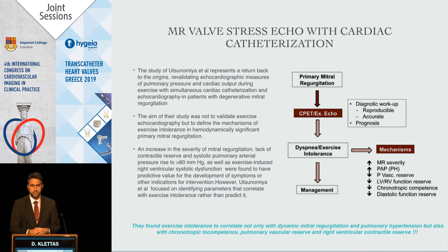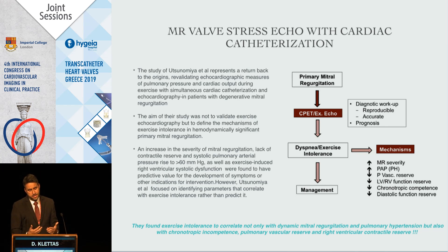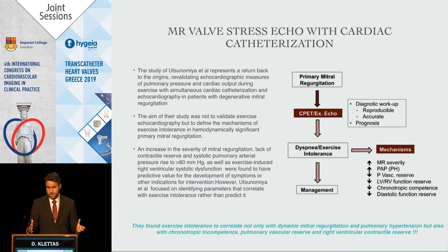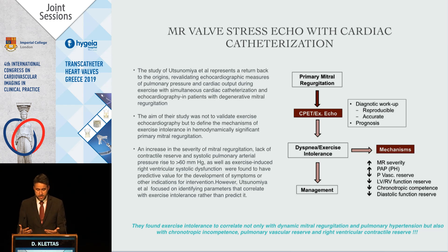Regarding mitral valve stress echo with cardiac catheterization: the aim of that study was not to evaluate Doppler measurements compared to catheterization, nor to identify predictors of bad or good prognosis. The aim was to define the mechanism of exercise tolerance in hemodynamically significant primary mitral regurgitation. The outcome confirmed the importance of pulmonary pressures and contractile reserve, and additionally showed that exercise intolerance was related to chronotropic competence, pulmonary reserve, and right ventricular function.